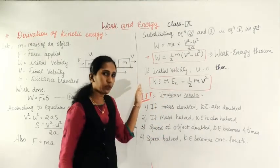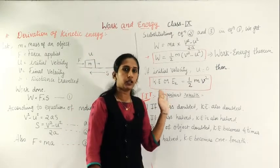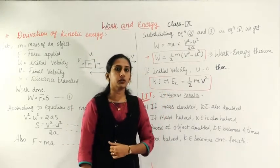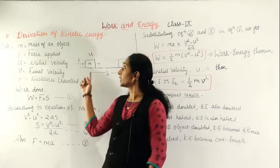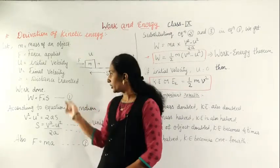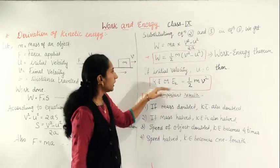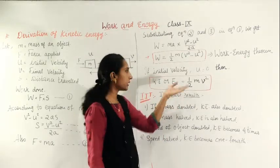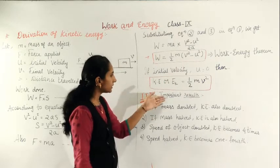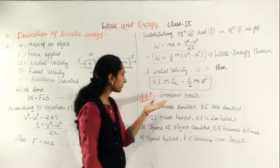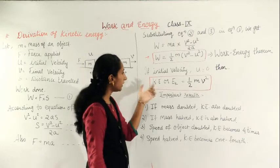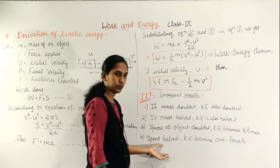This equation KE = ½mv² is very important. A question in the exam may ask: define kinetic energy and derive its equation. You should write the full derivation up to this point. If the question asks for the work energy theorem, write up to W = ½m(v² − u²). These results are also important for IIT-level questions.